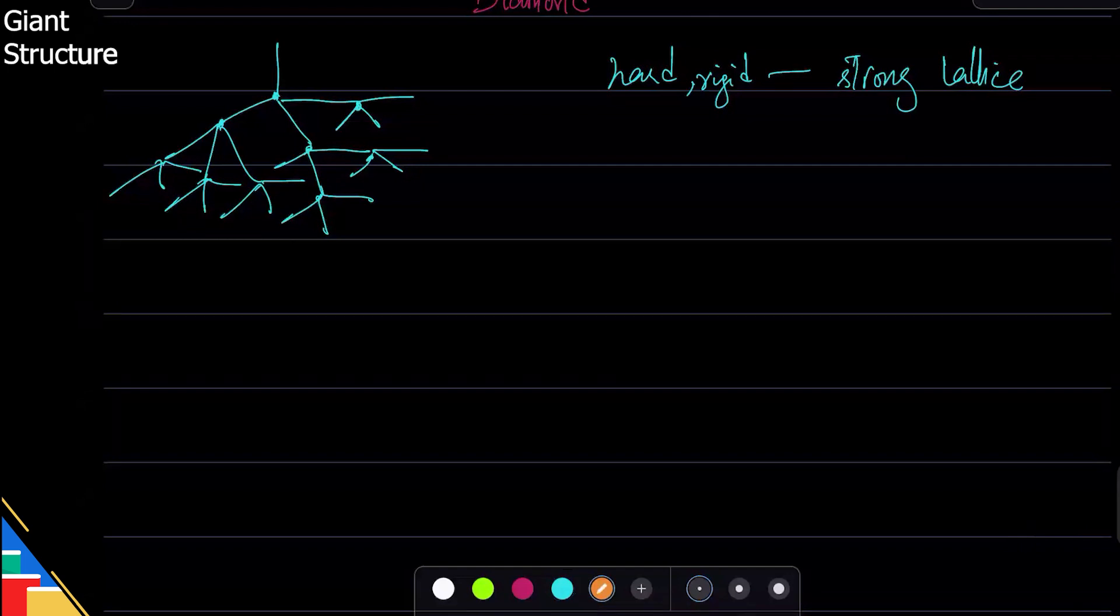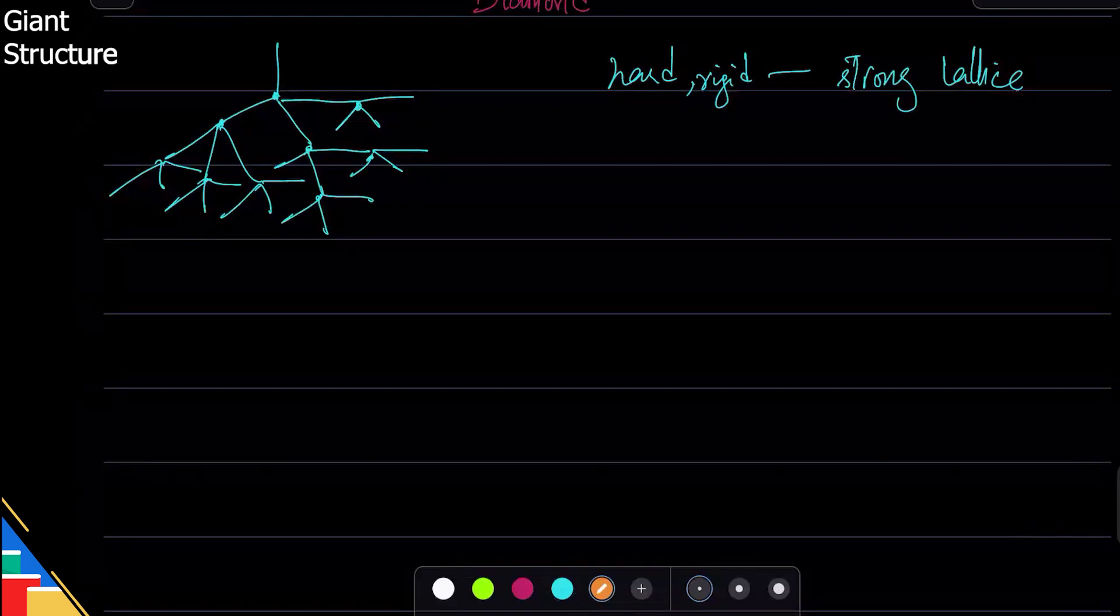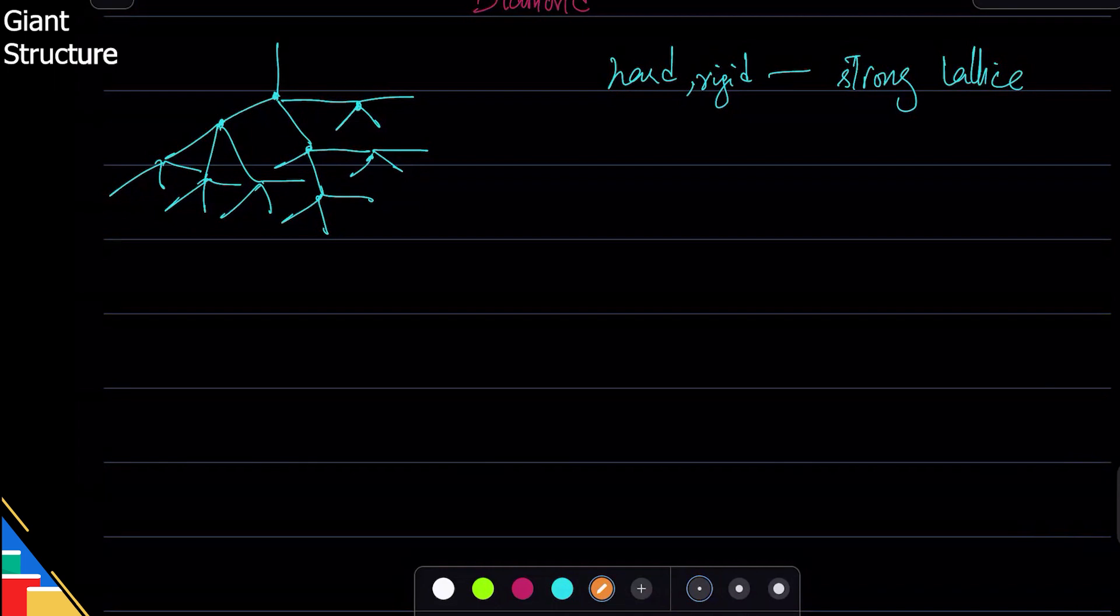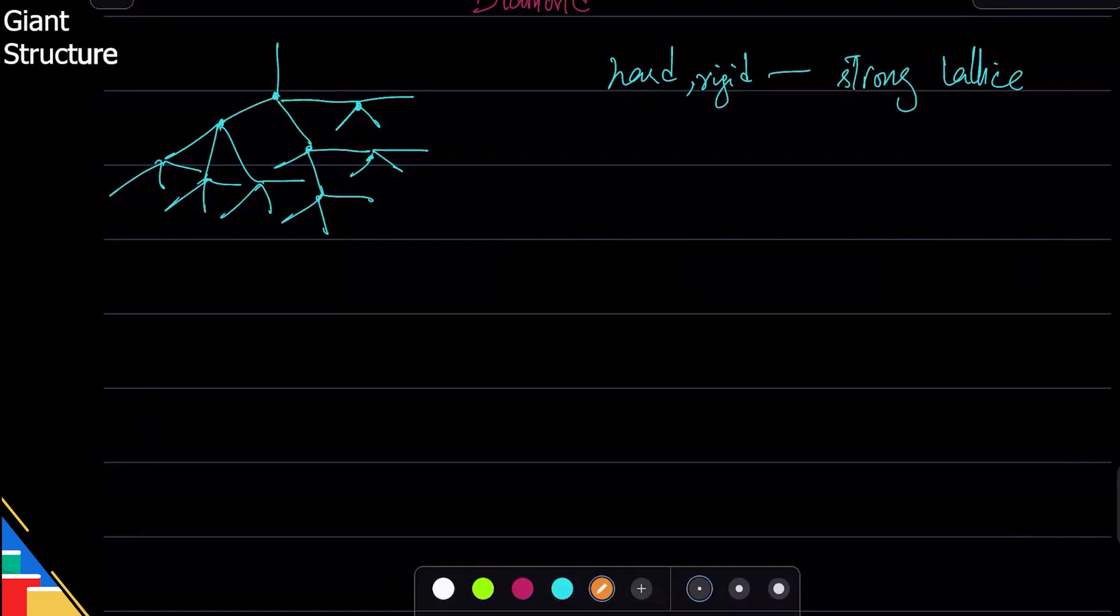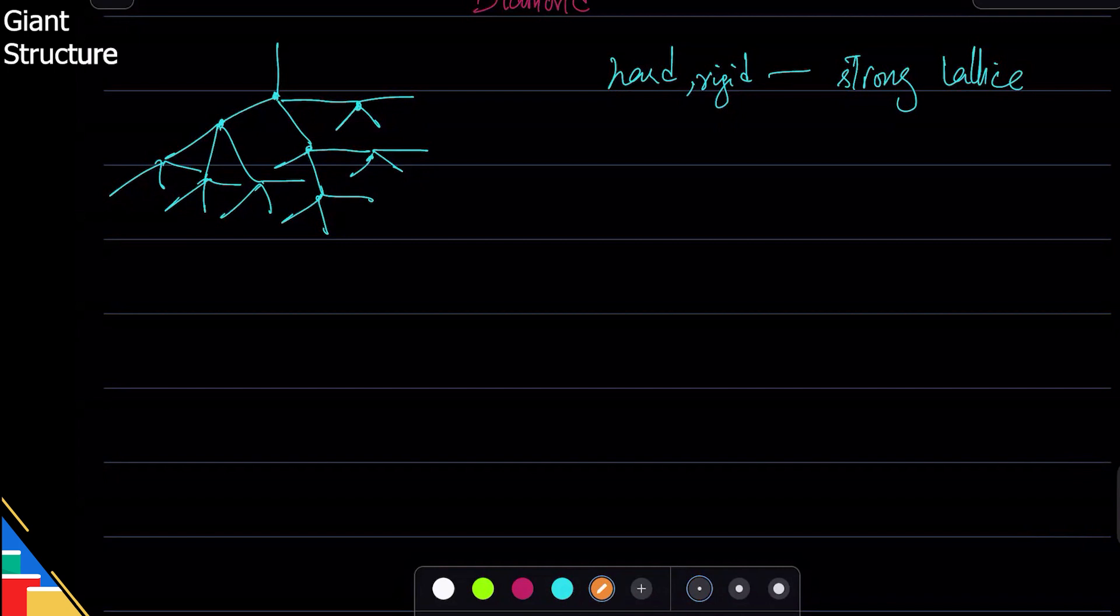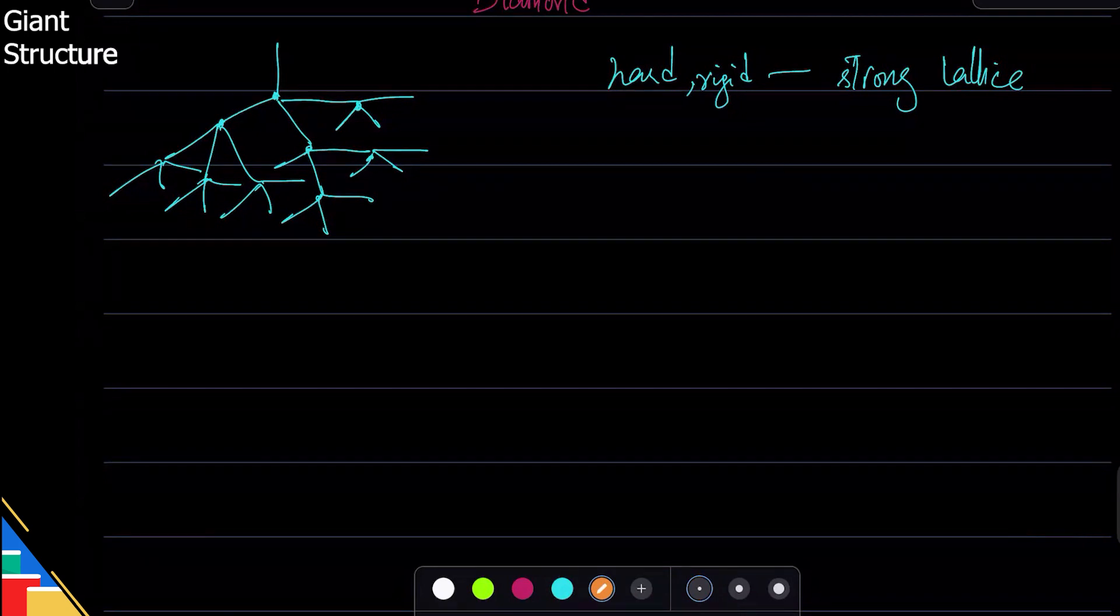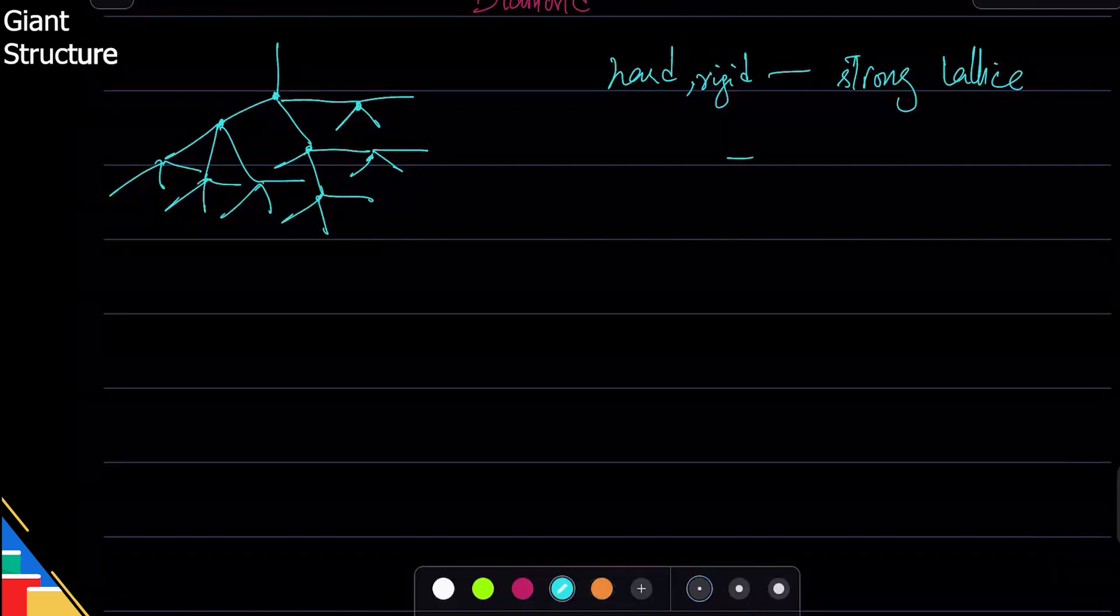The reasoning is that the bonding creates such a strong structure that there is no flexibility in it, because all the electrons are involved. So many bonds—every atom is strictly in place in that structure, so it's a very rigid lattice. The second property is it's used in drill bits.